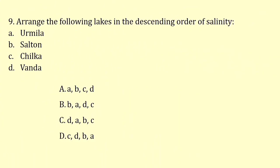Arrange the following lakes in descending order of salinity. The highest saline lake is Wanda, then Urmila, then Salton, and then Chilka. So the answer is option C.